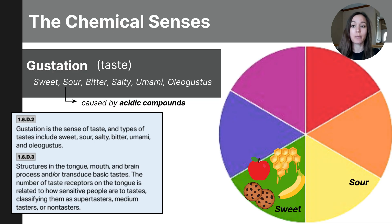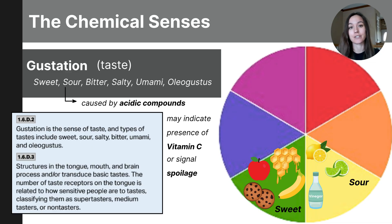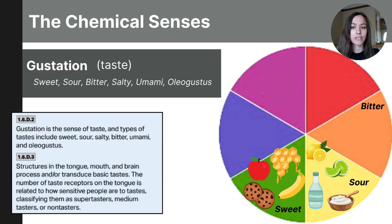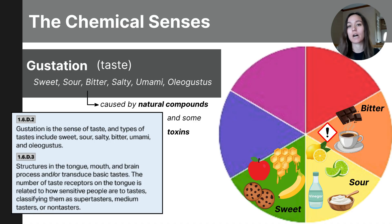Sourness often indicates the presence of vitamin C and can also signal spoilage in some cases. Examples of sour foods include lemons, limes, vinegar, and yogurt. Next is bitterness, which is detected by a wide range of compounds and often serves as a warning sign for poisons and toxins in nature. Some examples of bitter foods are dark chocolate, coffee, kale, and Brussels sprouts.